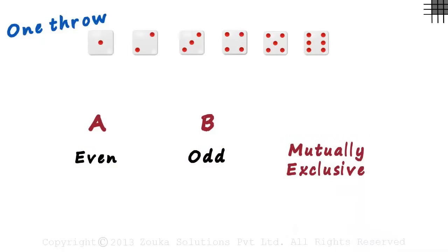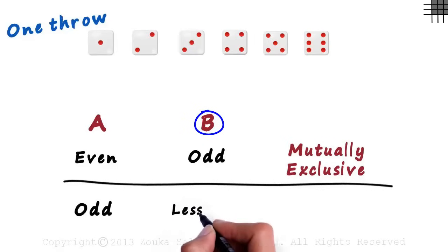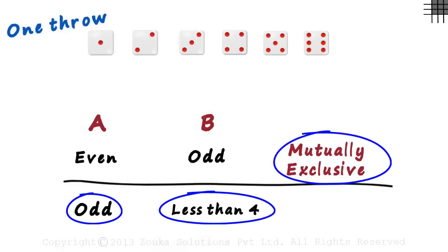Now let's look at another case. Say event A is getting an odd number and event B is getting a number less than 4. Are these events mutually exclusive? Let's see.